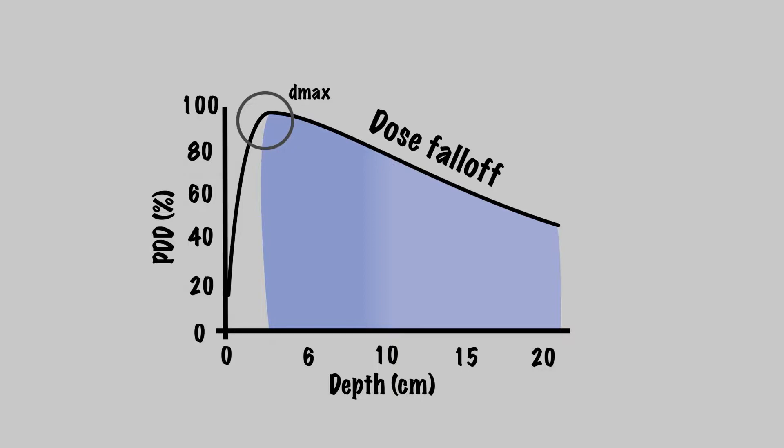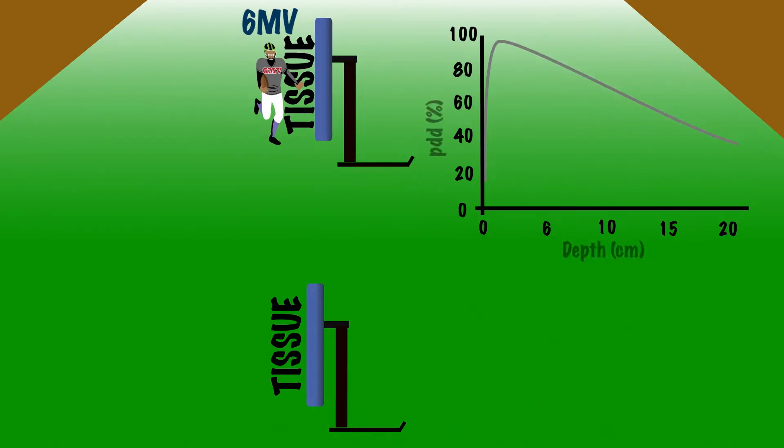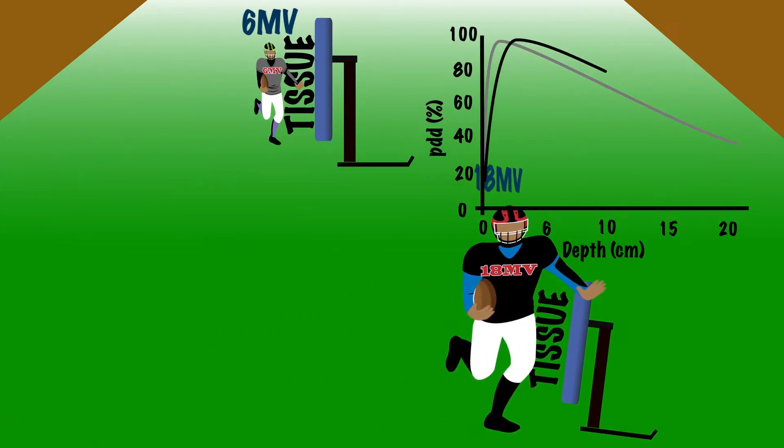Let's compare 6 and 18 megavoltage beams. Think of the photons like two football players, with the wimpier or lower energy photons getting stopped by what they encounter, whereas the stronger, higher energy photons are not.